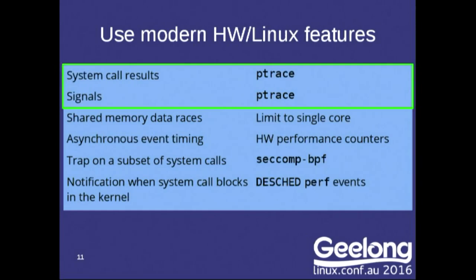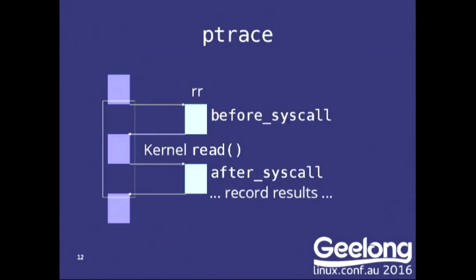Instead, we found ways to use modern hardware Linux features without code instrumentation. We use the ptrace API — basically the same features strace uses. When your program does a system call, ptrace generates a trap, stops the program, and sends a signal to RR. We can then run some code before the system call runs, let the system call actually execute in the kernel, and get control back afterwards to record the results. For a read call, we record the system call result register and the contents of the buffer with the data that was read in. That's simple and pretty well understood.